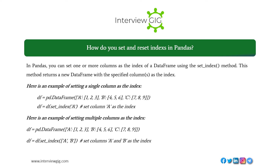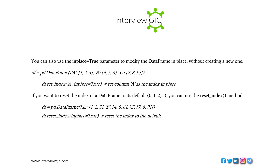You can also use the inplace=True parameter to modify the DataFrame in place. Here is an example of setting multiple columns as the index: df = pd.DataFrame({'a': [1,2,3], 'b': [4,5,6], 'c': [7,8,9]}), df = df.set_index(['a','b']) to set columns 'a' and 'b' as the index. Or use df.set_index('a', inplace=True) to set column 'a' as the index in place.